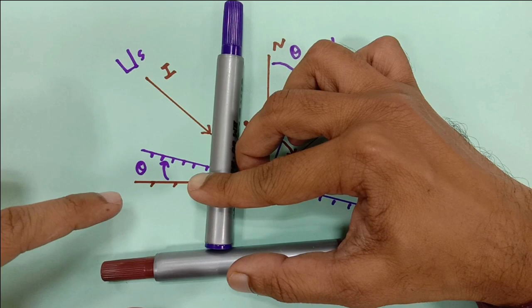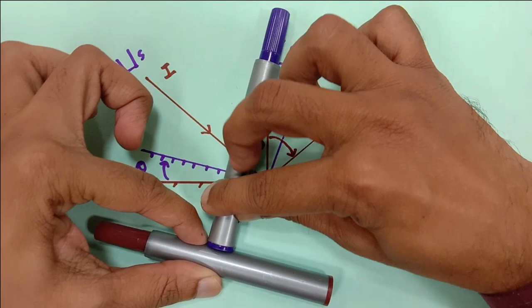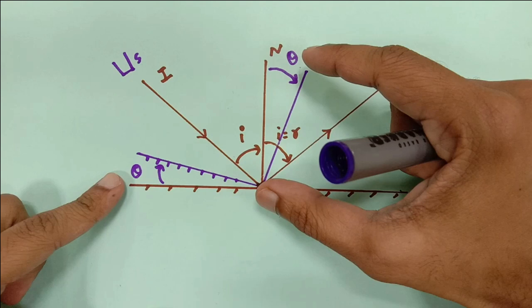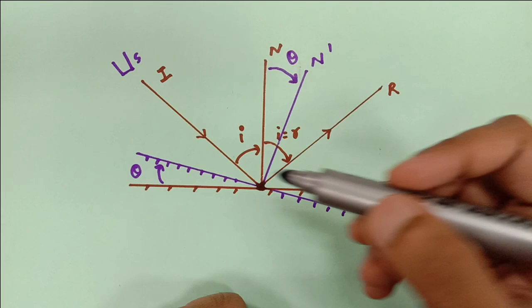So if this turns by 30 degrees in the upper direction, this will also turn by 30 degrees in this direction. So when the mirror turns by theta, the normal also turns by the same angle.